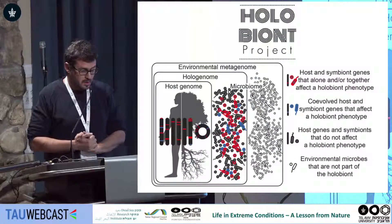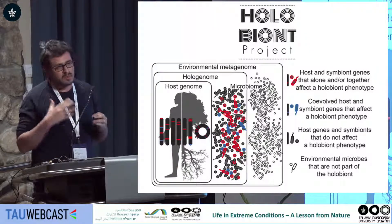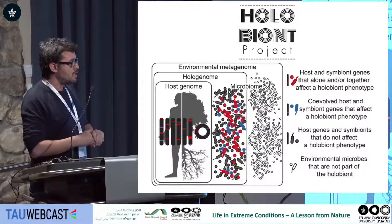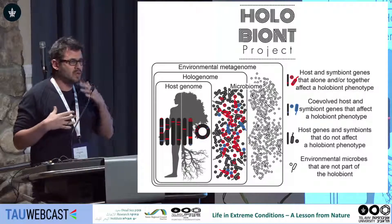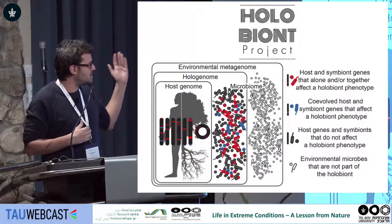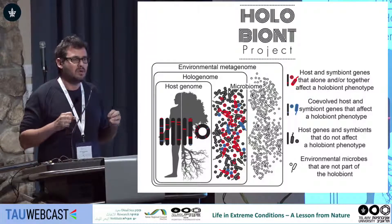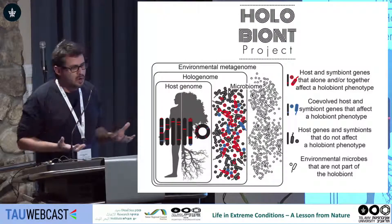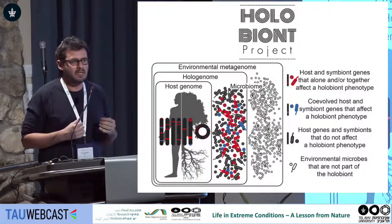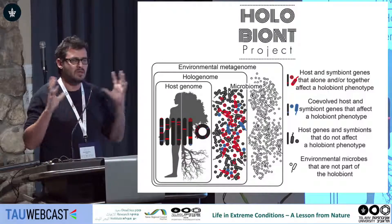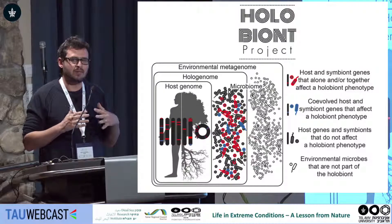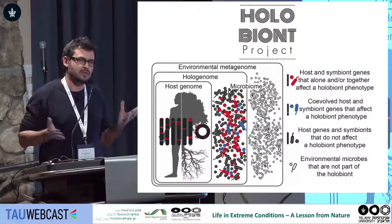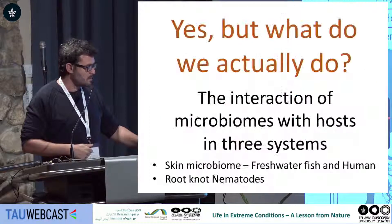The holobiont concept — or really hologenome, which is similar but not exactly the same — was coined by Eugene Rosenberg from Tel Aviv University. This concept urges us to look at an organism, whether human, tree, animal, or nematode in the soil, as an ecosystem in which all the symbionts it hosts actually interact. Instead of looking at one interaction at a time, we have to look at everything together — the interactions between interactions.